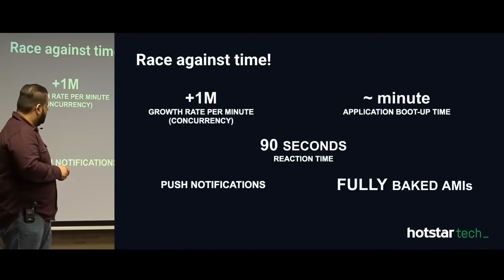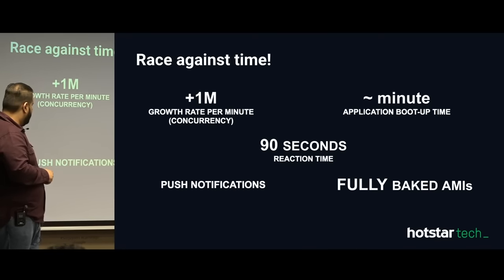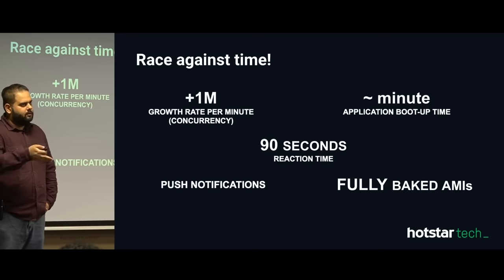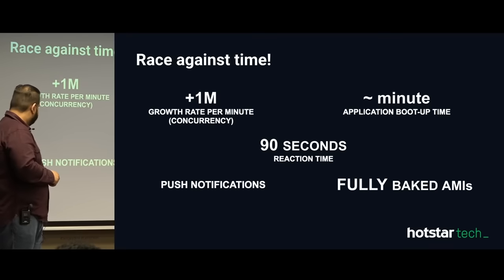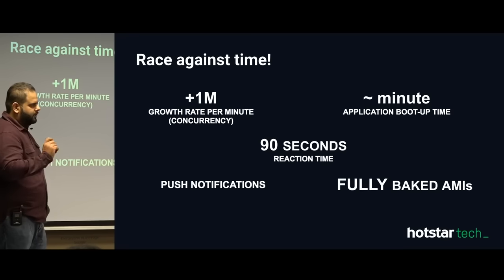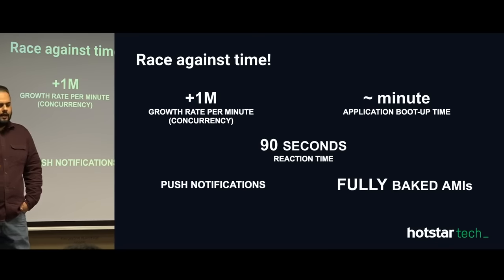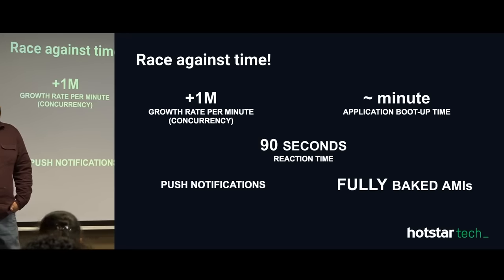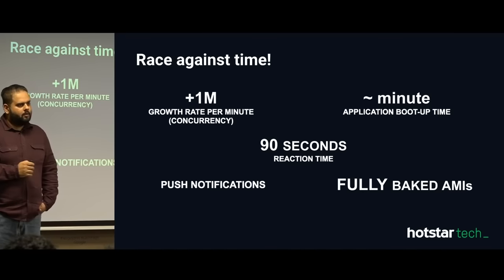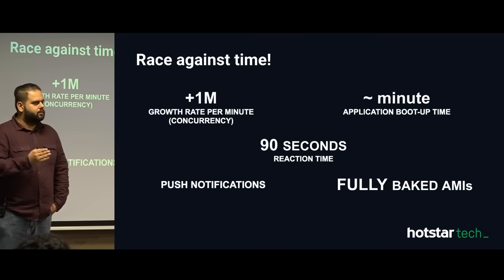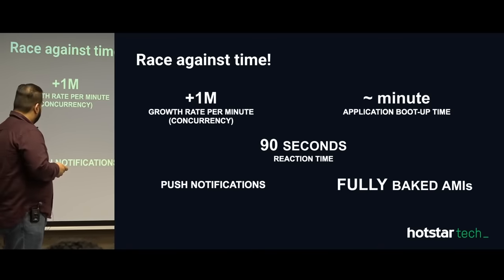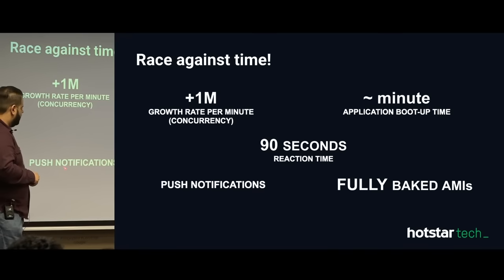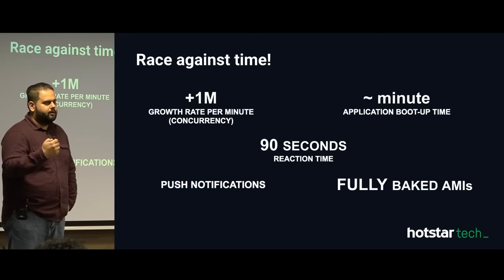We scale up proactively in advance and keep some buffer. Application boot time is around one minute, and 90 seconds is the reaction time we have to make a scaling decision. If there is a scheduled strategic timeout, we know traffic is going to drop — so we have some breathing room. Push notifications sent by the marketing team — especially for interesting moments like Dhoni hitting three sixes or a hat trick — go out to 150-200 million users. Even at two to four percent conversion, that is four to six million users added to the platform in a very short span.